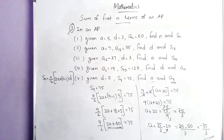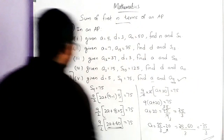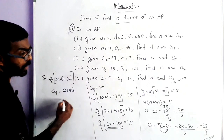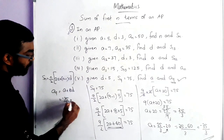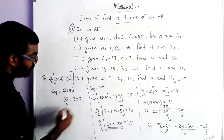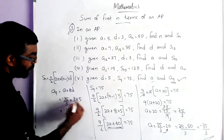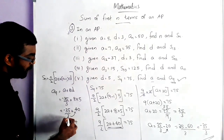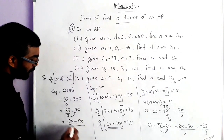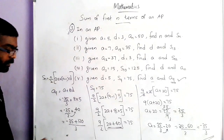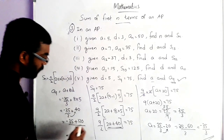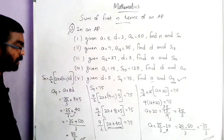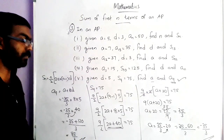Now we can find the 9th term. A9 is equal to A plus 8D. The value of A is minus 35 by 3, plus 8 into D, where D is 5. So minus 35 by 3 plus 40. Cross multiplying: minus 35 plus 120 all divided by 3, which equals 85 by 3. So the 9th term A9 is 85 divided by 3.